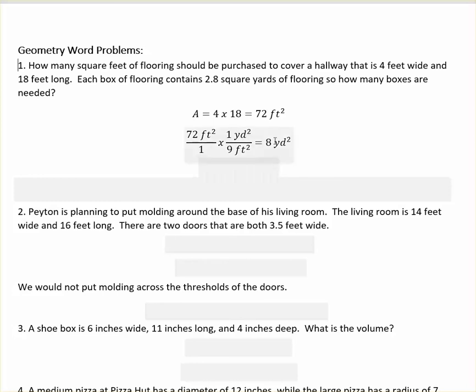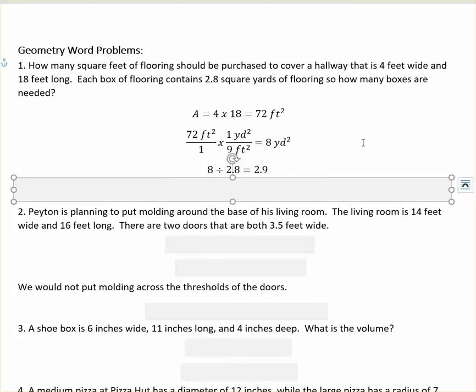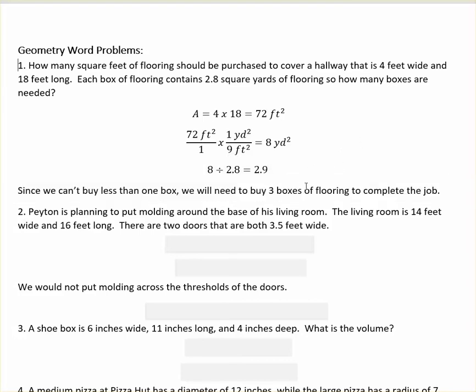So 8 square yards, and each one contains 2.8, so I would say how many times does 2.8 go into 8, and that is 2.9. Since we can't buy less than one box, we would have to round up, which means we would have to buy 3 boxes of flooring to complete the job.